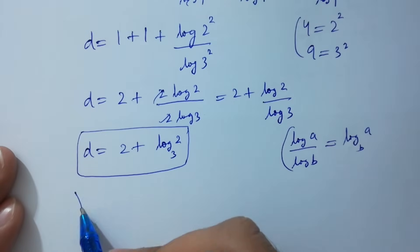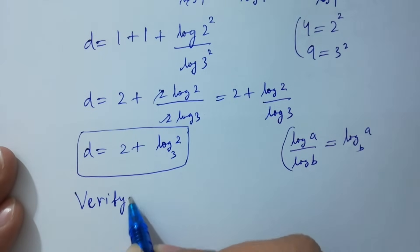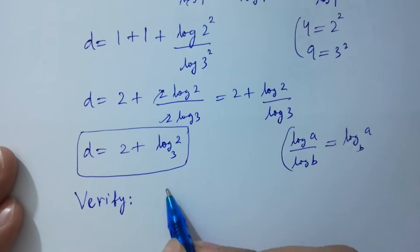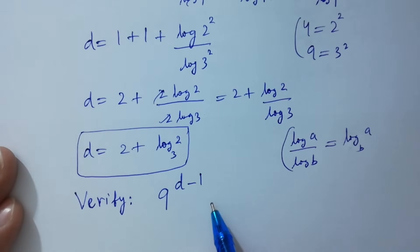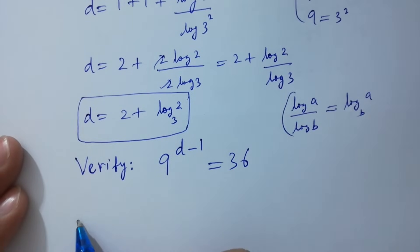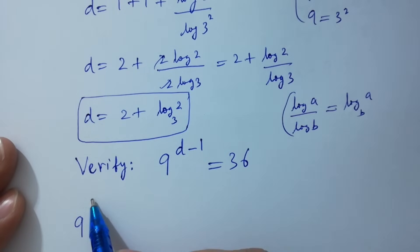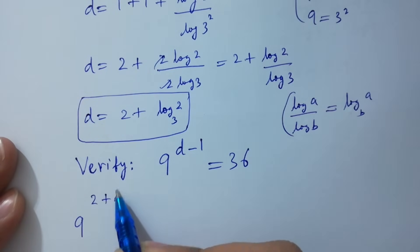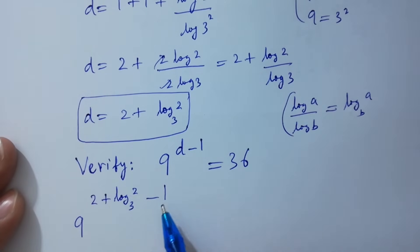Now, let's verify. 9 to the power d minus 1 equals 36. Substituting d equals 2 plus log 2 to the base 3, we have 9 to the power 2 plus log 2 to the base 3 minus 1 equals 36.